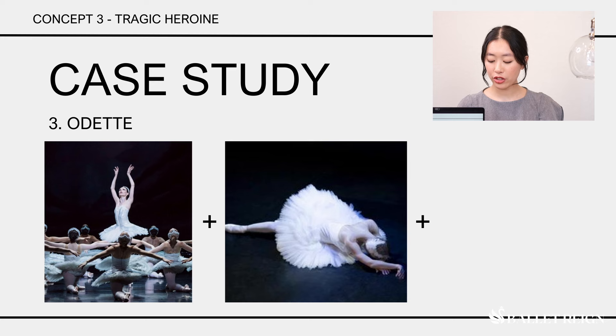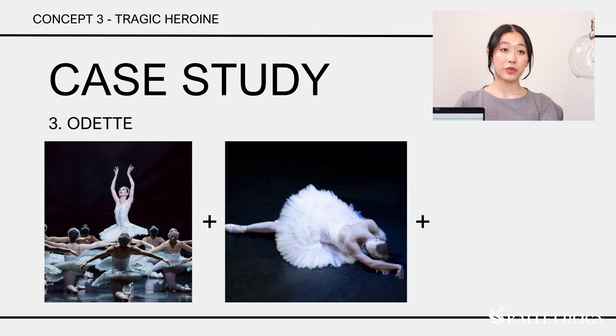Now, Odette did choose option 2, which involves her and Siegfried's death freeing the cursed swan maidens, while she and Siegfried reunite in paradise. Although she does like to change things around a bit, sometimes even opting out of death entirely.